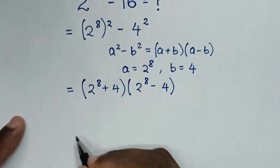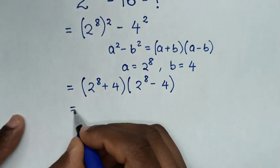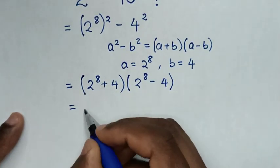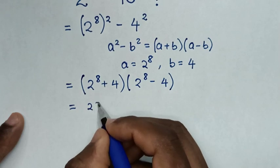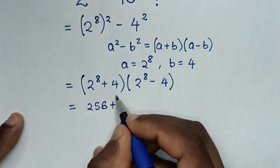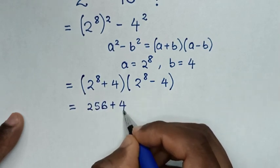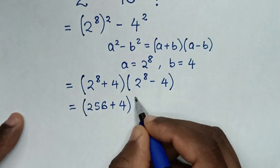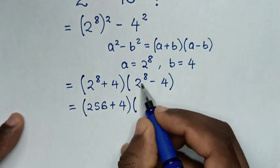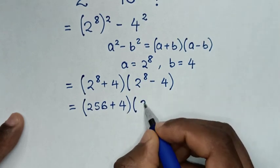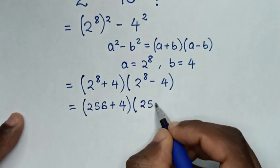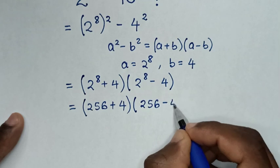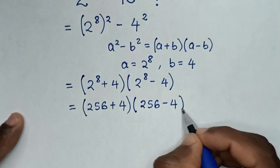In the next step, it will be equal to: 2^8 is 256, so we have (256 + 4) times (256 - 4).